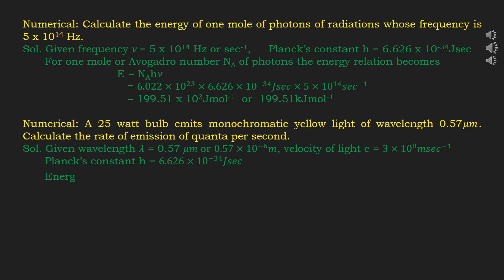The energy of one photon E = hν. By substituting ν = c/λ, the relation becomes E = hc/λ. Putting in respective values: E = (6.626 × 10⁻³⁴ J·s × 3 × 10⁸ m/s) / (0.57 × 10⁻⁶ m), which comes out to be 3.487 × 10⁻¹⁹ joule.